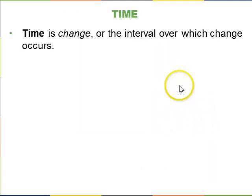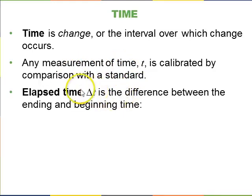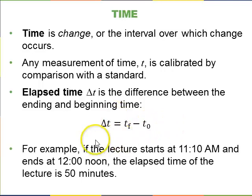Okay, so time. Before we get into velocity, we need to consider time. So time, it's hard to define in the dictionary, but it's something to do with change. It's the interval over which change occurs. So any actual measurement of time is calibrated by comparison with some standard clock. And elapsed time, delta t, is the difference, t final minus the initial. So for example, if the lecture starts at 11:10 AM and it ends at noon, then the elapsed time of the lecture is 50 minutes.